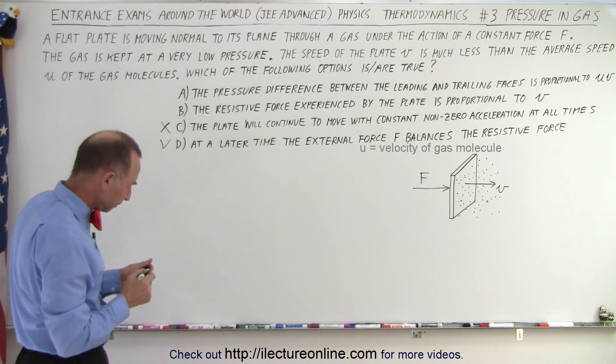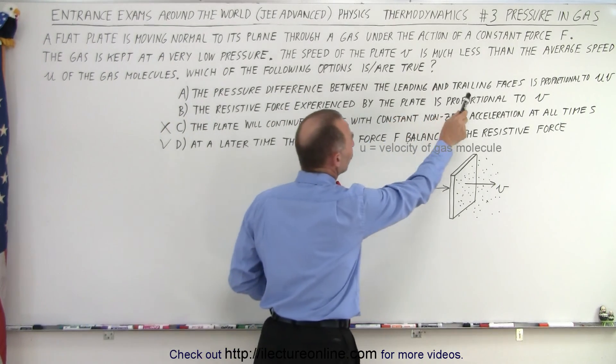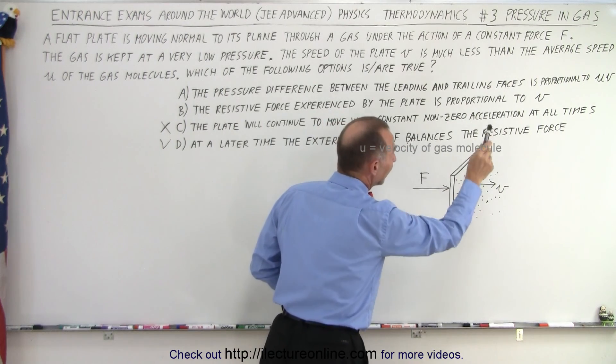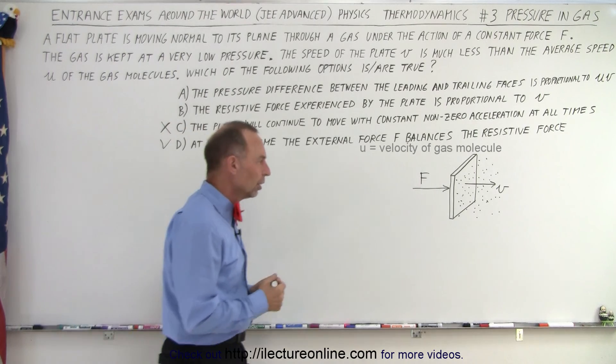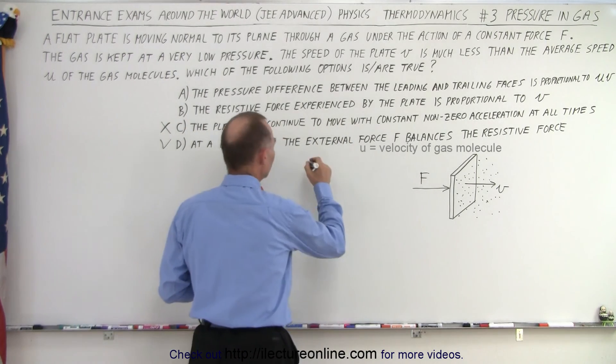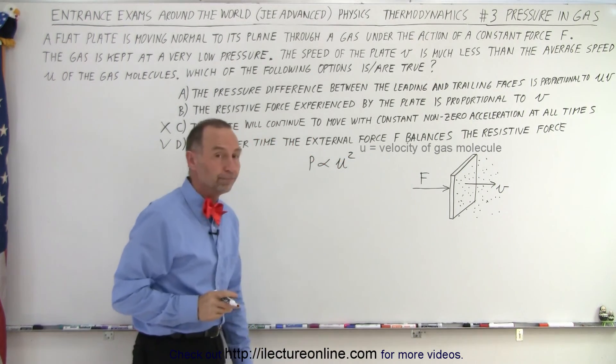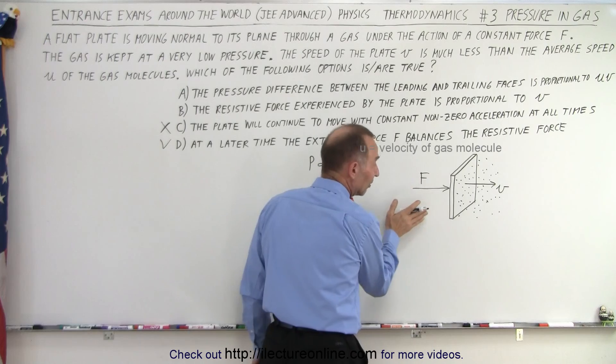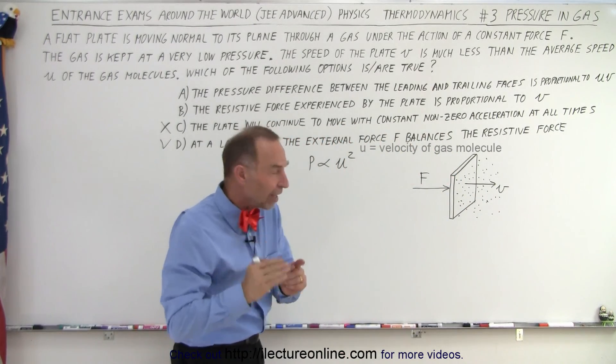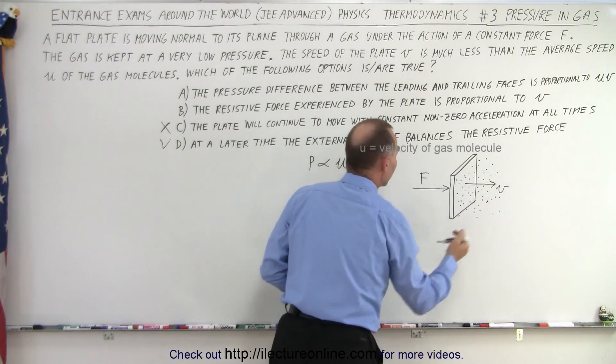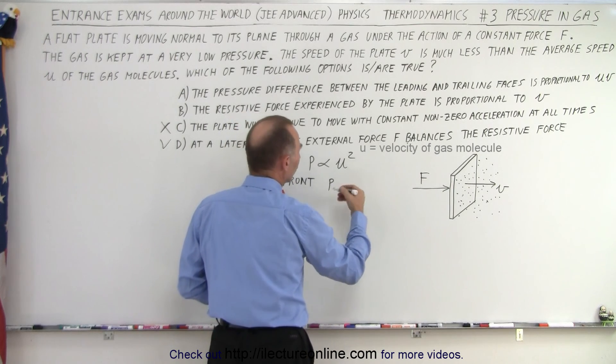What about A and B? It says that the pressure difference between the leading and trailing faces of the plate is proportional to U times V. Well let's explore that one. First of all, notice that the pressure is proportional to the velocity squared of the molecules. Now on the leading edge of the phase, since the phase is pushing into the molecules, the effective velocity of the molecules will increase by the velocity V.